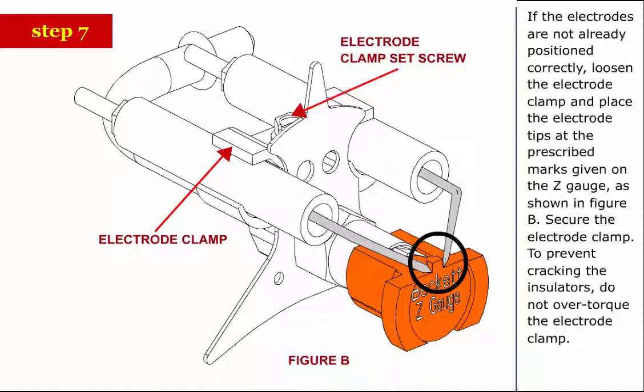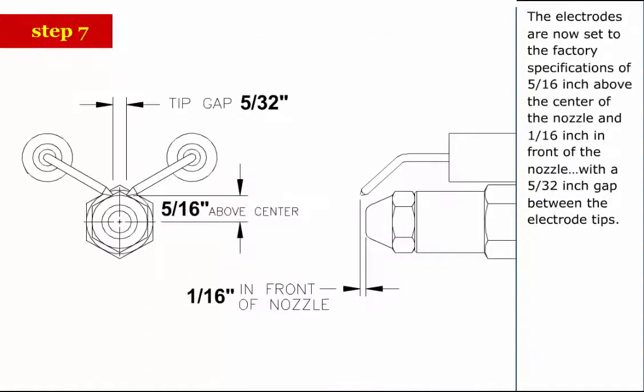To prevent cracking the insulators, do not over-torque the electrode clamp. The electrodes are now set to the factory specifications of 5/16 inch above the center of the nozzle and 1/16 inch in front of the nozzle with a 5/32 inch gap between the electrode tips.